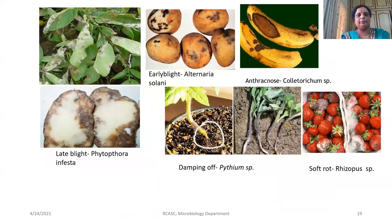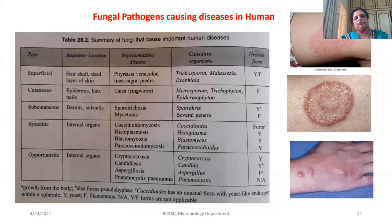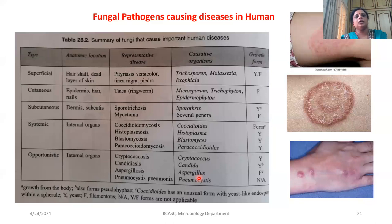We also studied examples of fungi which cause diseases in humans, starting from different kinds of infection: cutaneous, subcutaneous, superficial, systemic, and opportunistic infections. Students, kindly note some important examples like Trichosporon species, Microsporum species, Histoplasma, Blastomyces, Cryptococcus, Candida, and Aspergillus. These are some of the dominant groups of organisms which cause infection in humans.